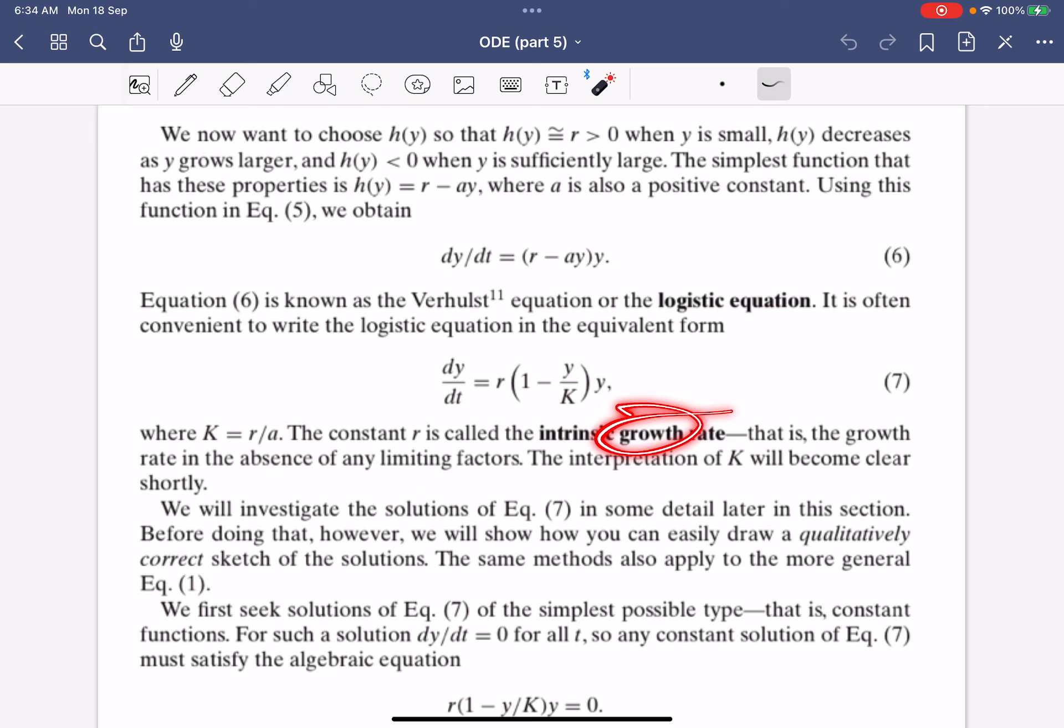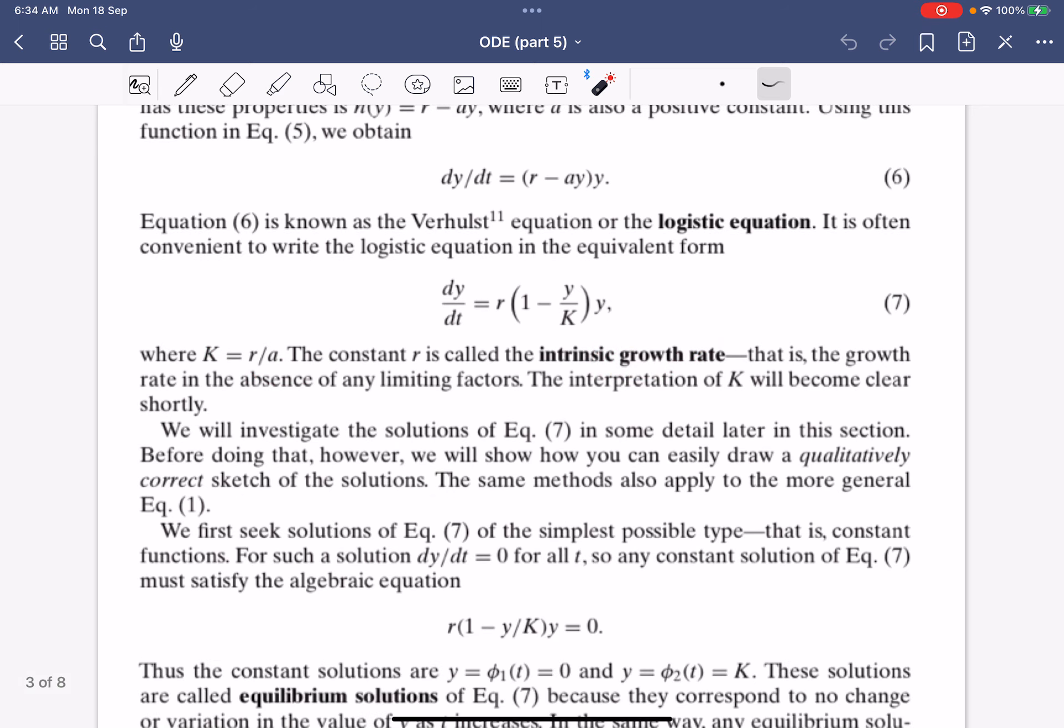Where r is the intrinsic growth rate. So without any limiting factors, r is how much you grow, because you can see it's over here. The interpretation of K we'll talk about later.